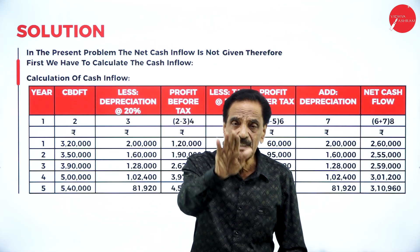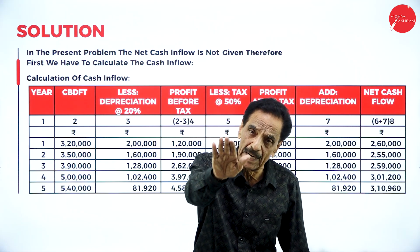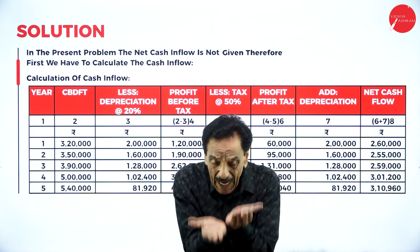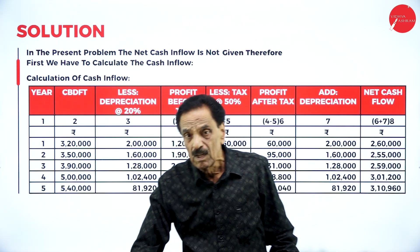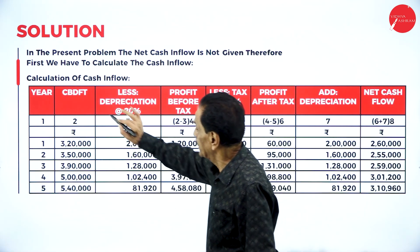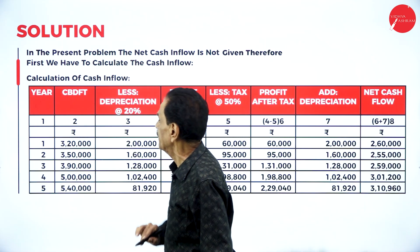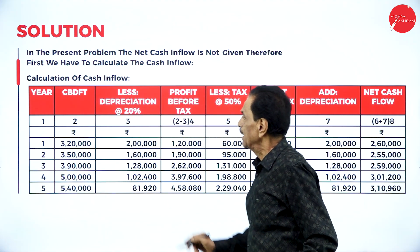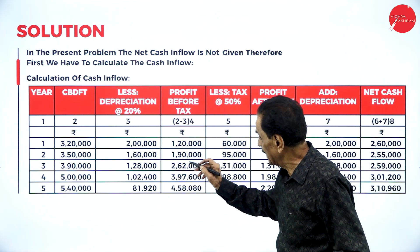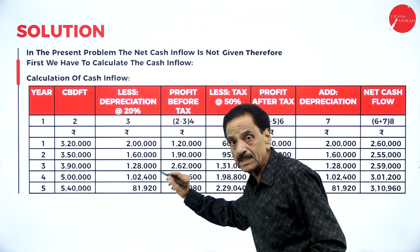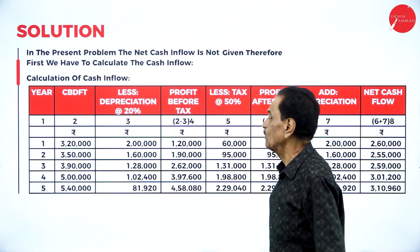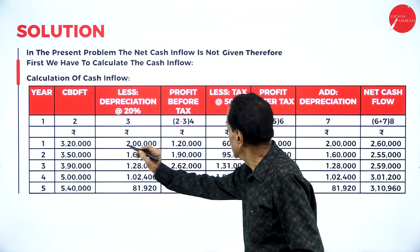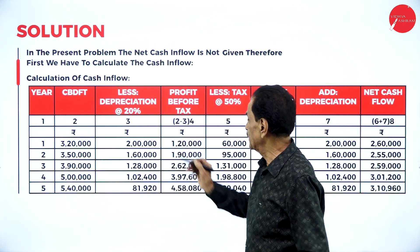What is cash inflow? Given cash inflow before depreciation and taxation, minus depreciation, minus taxation, add back depreciation — that is your cash inflow. The given cash inflow before depreciation and taxation figures are 3 lakh 20 thousand and 3 lakh 50 thousand across the years. Depreciation already calculated: 2 lakh in year one, 1 lakh 60 thousand in year two, 1 lakh 28 thousand, 1 lakh 2 thousand 4 hundred, and so on. After deducting, the profit before tax figures come out.